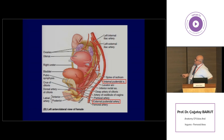This figure illustrates the course of the internal pudendal artery. As stated, it arises from the internal iliac artery and courses towards the ischioanal fossa. During this course it first leaves the pelvic cavity and then enters into the ischioanal fossa.